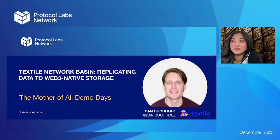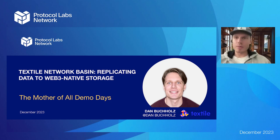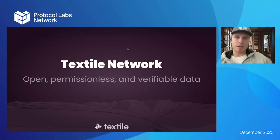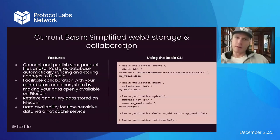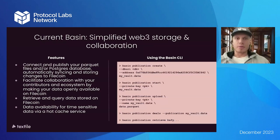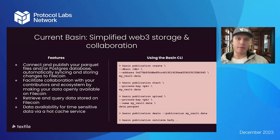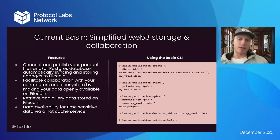Next up we have Dan presenting Textile Network Basin. Today we'll walk through a brief overview of what we're building and then show a quick demo of how you can actually use the network. We've designed an initial version of the protocol. To interact with the Textile Network you use the Basin CLI tool, which lets you do a few different things — you can create a vault, which is a container for data, and stream data from existing web2 infrastructure like a Postgres database, or upload raw Parquet files.